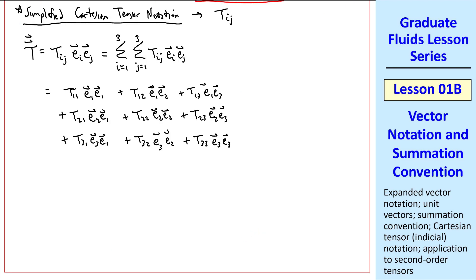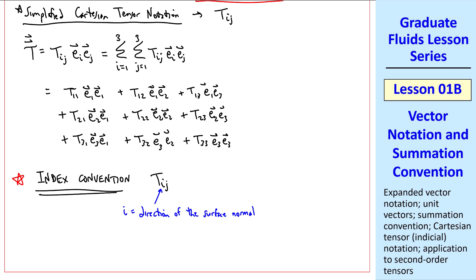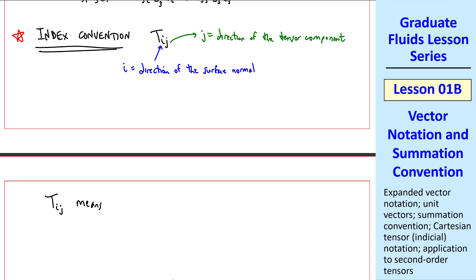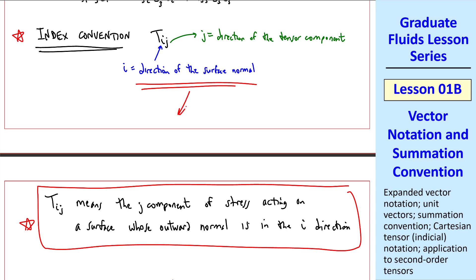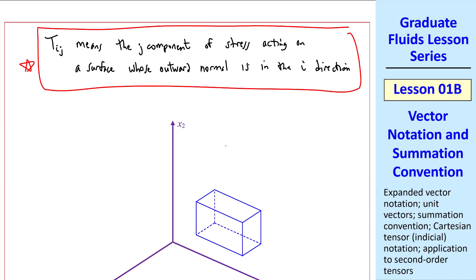But what do these directions actually mean? Well, the index convention for tij is that the first index, here the i, is the direction of the surface normal, and the second index, here the j, is the direction of the tensor component. So when we write tij, it means the j component of stress acting on a surface whose outward normal is in the i direction. That's how we interpret this index convention.